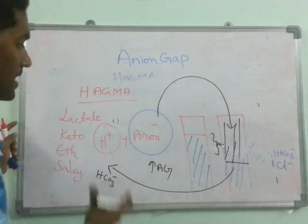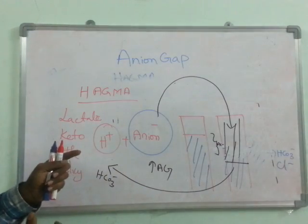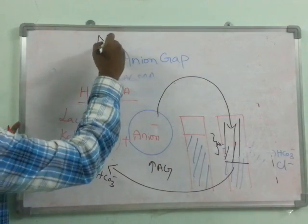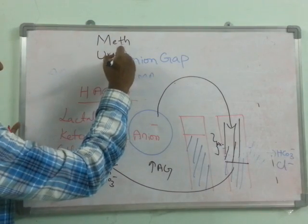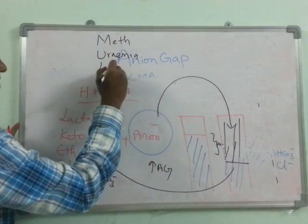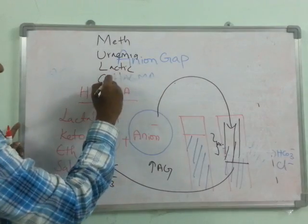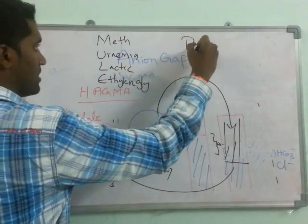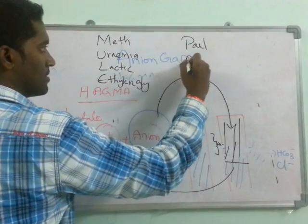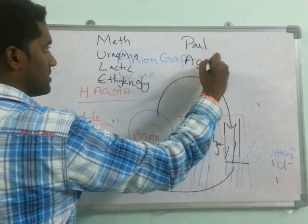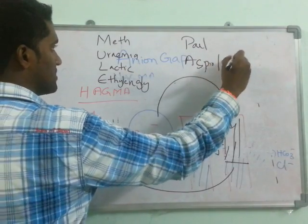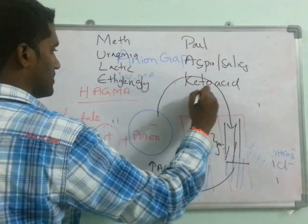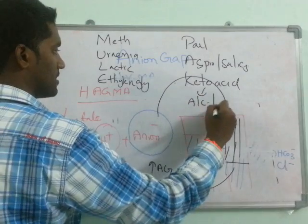This is the mechanism of high anion gap metabolic acidosis. It can be remembered by the mnemonic MUDPILES: methanol poisoning, uremia, lactic acidosis, ethylene glycol poisoning, paraldehyde poisoning, aspirin or salicylate poisoning, and ketoacidosis — which can be either alcoholic or diabetic.